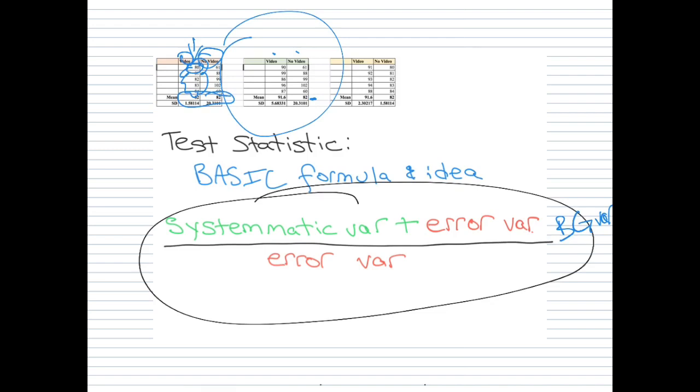But look at how much variation there is within each group. The within group variation is really high. We've got a standard deviation of 5.68, which is moderately high, but look at the no video group. We have a standard deviation of 20 points. We've got a range from 60 to 102. So that 82 is a very poor prediction of how people did in the no video group. It kind of puts a damper on our ability to generalize that.